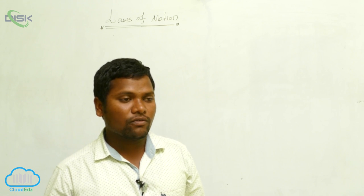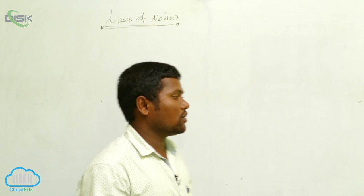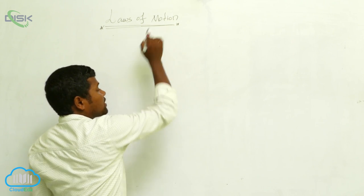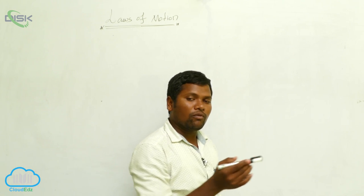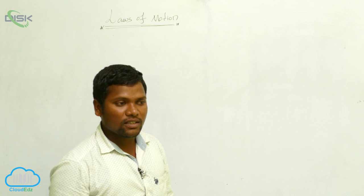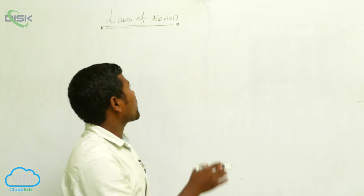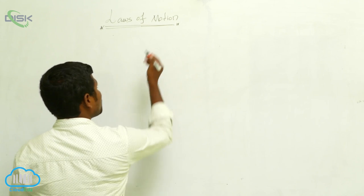What is motion? When can we say an object is in motion, and when can we say it is at rest? Motion means the object is moving from one place to another place — then we can say that object is in motion.